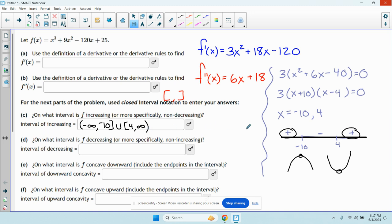On what intervals is f decreasing? It's decreasing where the derivative is negative. So it's decreasing from negative 10 to 4.